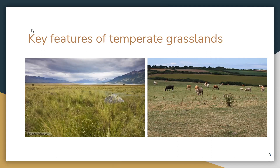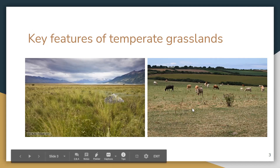Rainfall is moderate. The annual average is about 20 to 35 inches. The amount of annual rainfall influences the height of grassland vegetation, with taller grasses in wetter regions. The seasonal drought, occasional fires, and grazing by large mammals all prevent woody shrubs and trees from invading and becoming established.